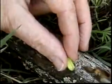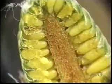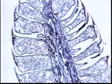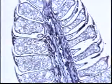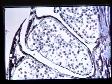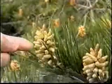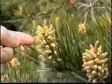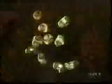Pines produce clusters of male cones. Slice one to see the chambers where the sperm-containing pollen grains are produced. Maturing together, male cones can fill the air with pollen grains, each equipped with two air sacks, improving their air time.